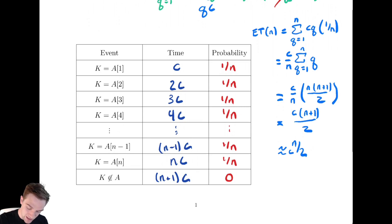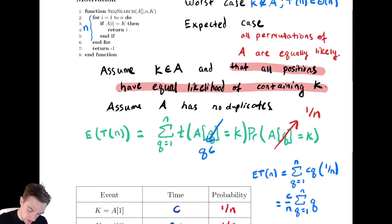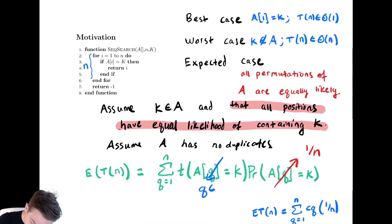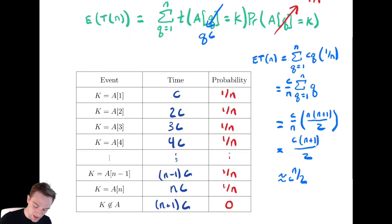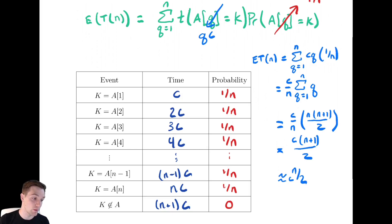So with that in mind, our expected case runtime E[T(n)] is in Θ(n). It is the same as the worst case for this problem — that is not always the case, but in this situation it happened to be. This idea of computing the time for each possible input, and then computing the probability of each of those possibilities, is the foundation for how we're going to do expected runtime analysis. We will see in future videos the formal definitions of what we're doing and we will apply this to several different algorithms in this section.